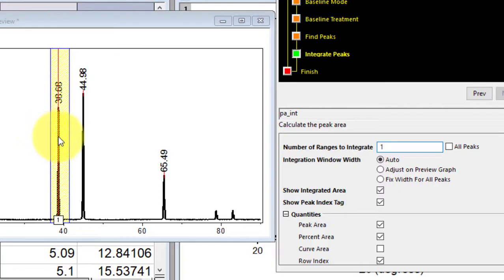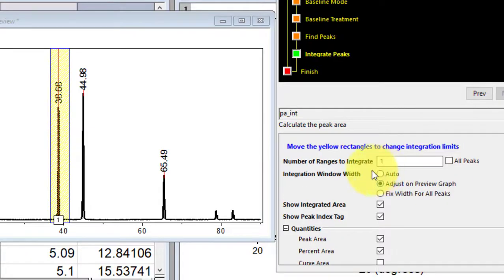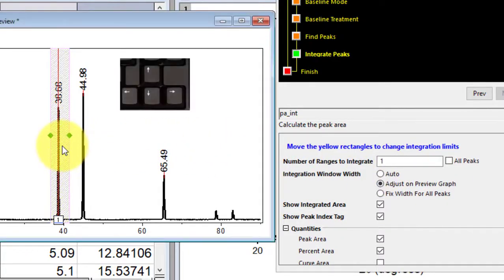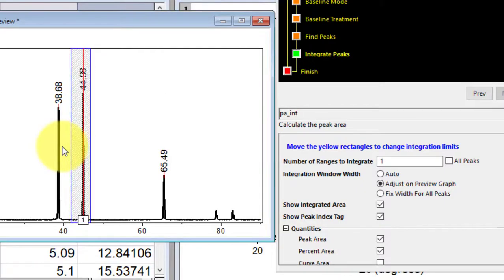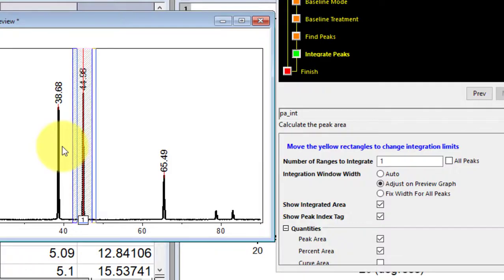Now if I want to move this one to this peak, if I am interested in this peak area, or this one, for that I will have to click here to adjust on preview graph. And with the arrows, I will now select this one, and with the arrows I can move it to this one, or to the next peak.